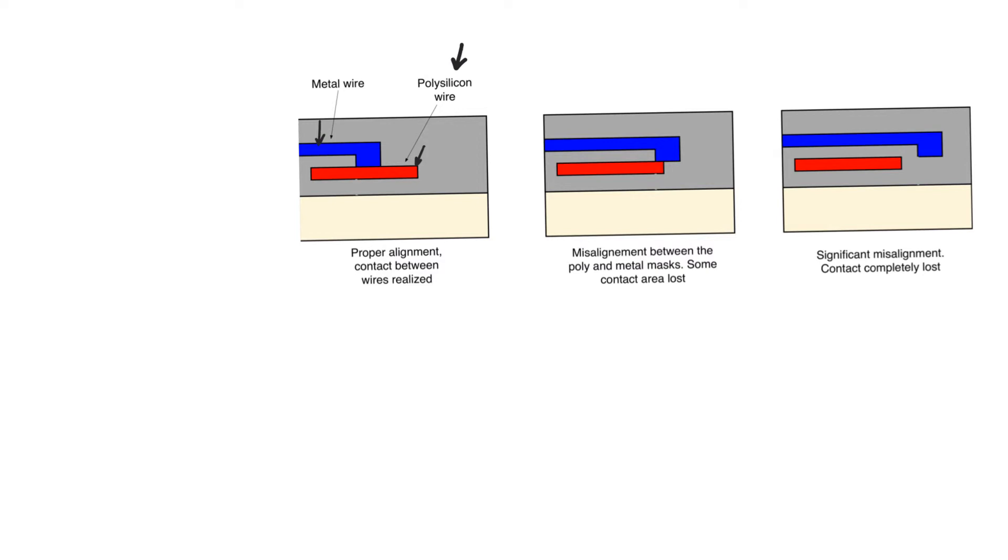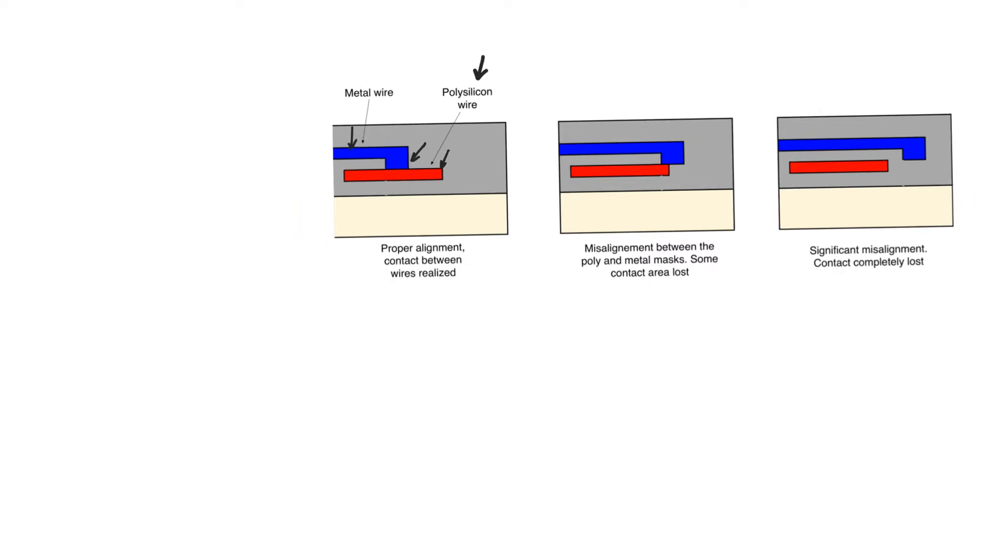As we will see in the CMOS process, the polysilicon gate is made using a certain mask while the metal wire is made using a different mask.